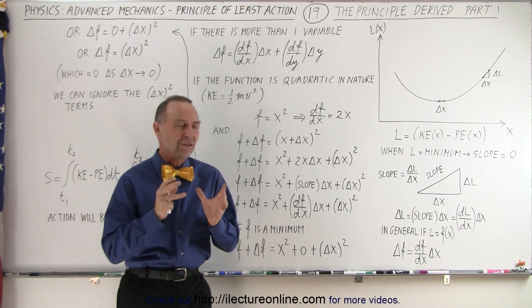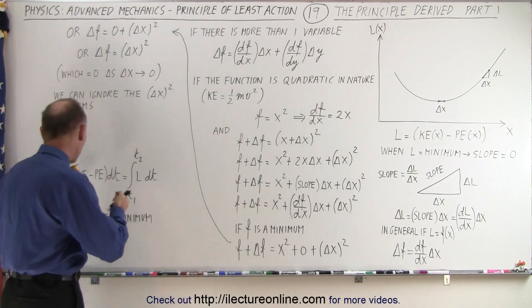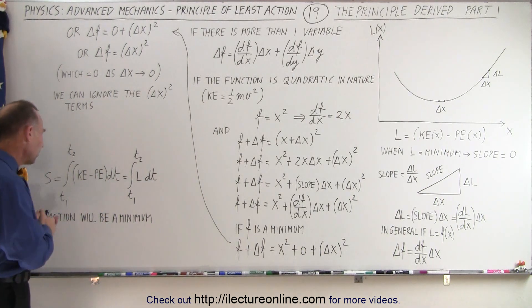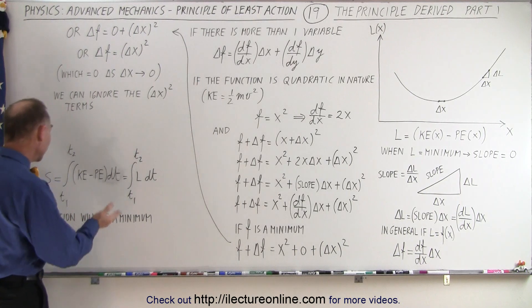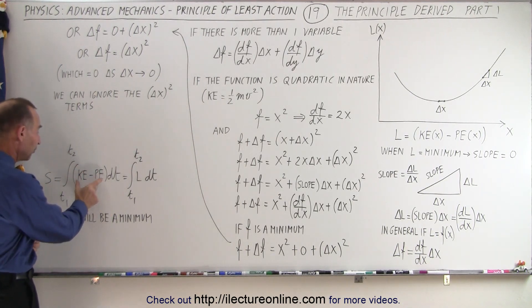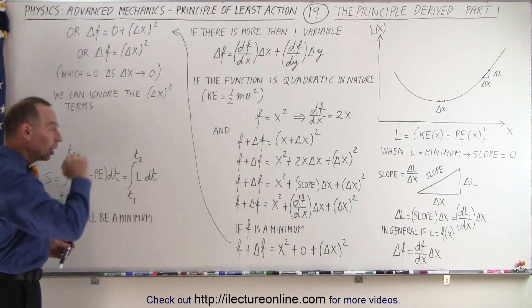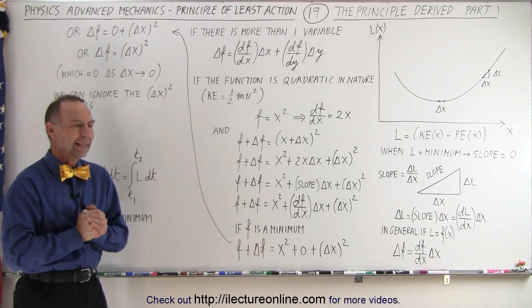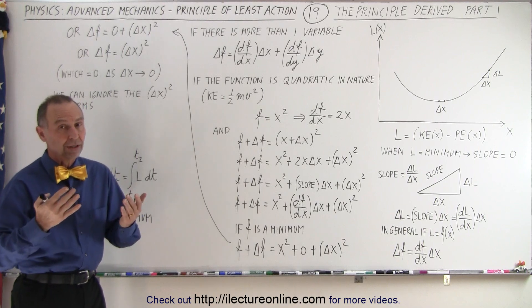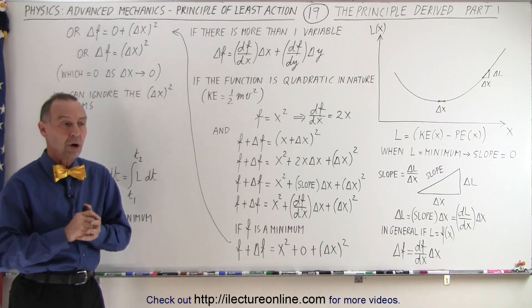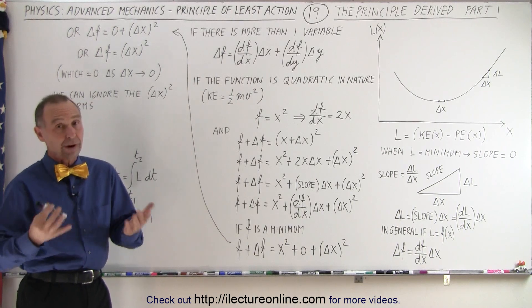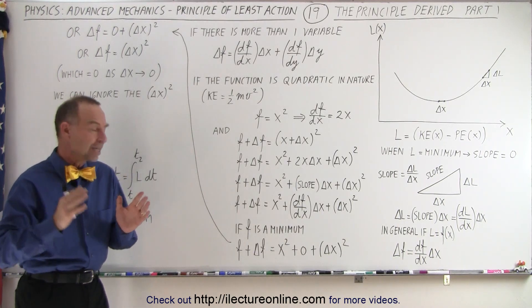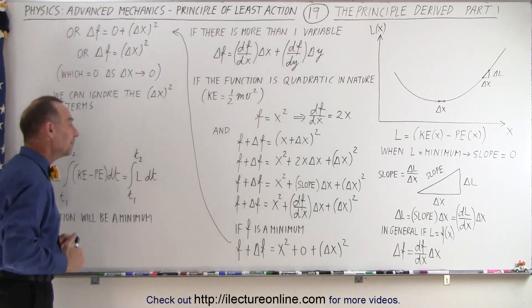It all centers around this equation, or at least what we could call the integral that represents the action. We want that action to be a minimum, and so we take the integral over time of the difference between the kinetic energy and the potential energy along a particular path taken by a particle. That path must be in what we call a conservative force field, like a gravitational field, and then wherever the path is taken, we know that this integral will be a minimum.